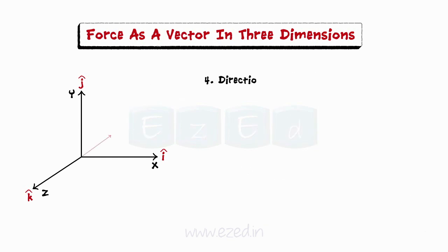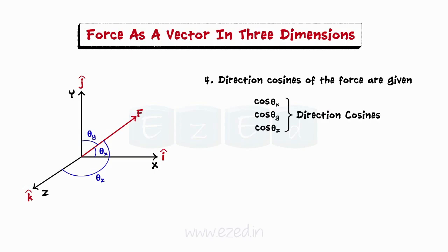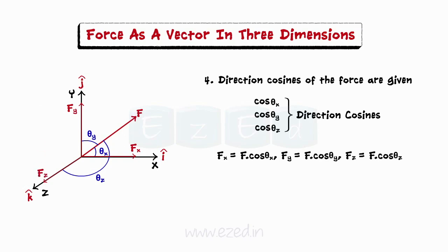In the fourth and final type, direction cosines of the force are given. If theta-x, theta-y, and theta-z are the inclinations of the force with the x, y, and z directions respectively, then cos theta-x, cos theta-y, and cos theta-z are called the direction cosines of the force. The components of the force can be expressed as: Fx equals F cos theta-x, Fy equals F cos theta-y, and Fz equals F cos theta-z. The relation for these direction cosines is: cos²(theta-x) + cos²(theta-y) + cos²(theta-z) equals 1.